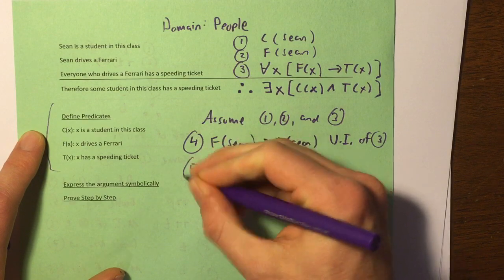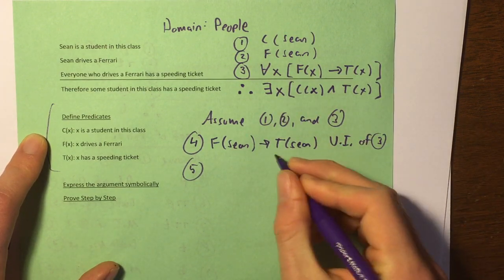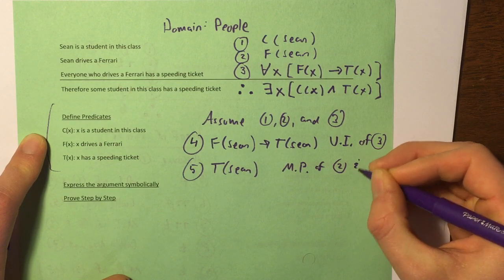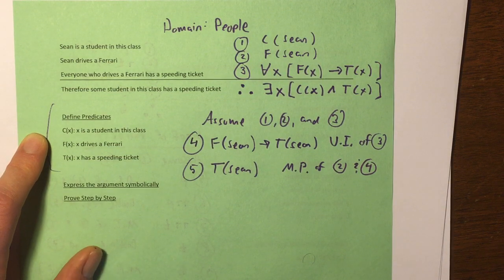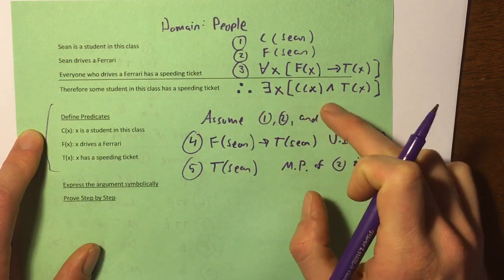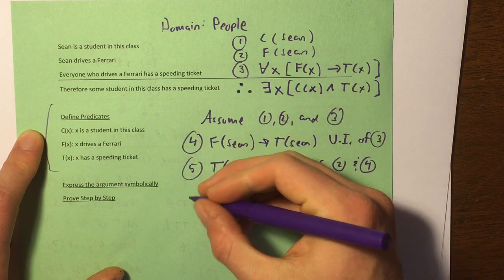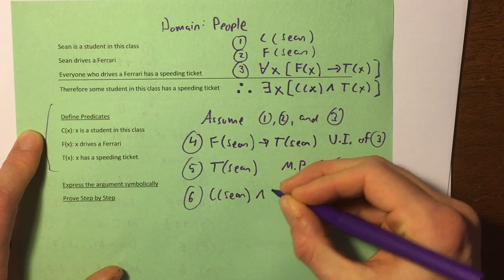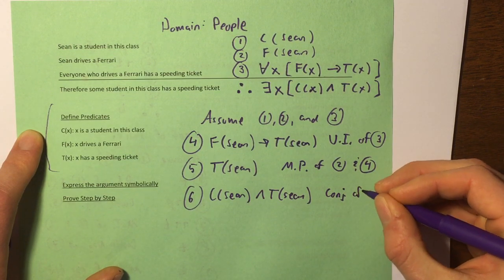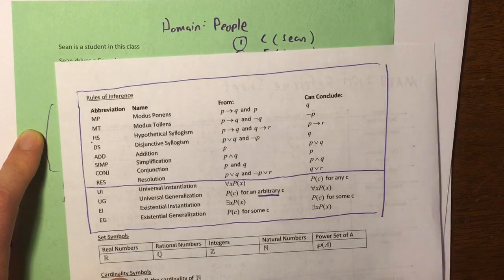So now step five: we do know Sean drives a Ferrari, so that's the hypothesis. We can use modus ponens to conclude T of Sean. That is modus ponens of premise two and statement four. Now we've got T of Sean. What we're aiming for is: there exists X, C of X and T of X. Well, we have T of Sean and we also have C of Sean, so let's put these together. Number six: we know C of Sean and T of Sean — that is conjunction of number one and five.